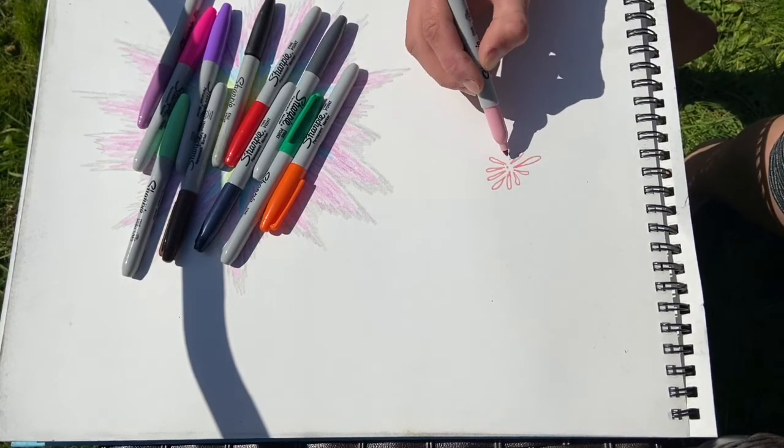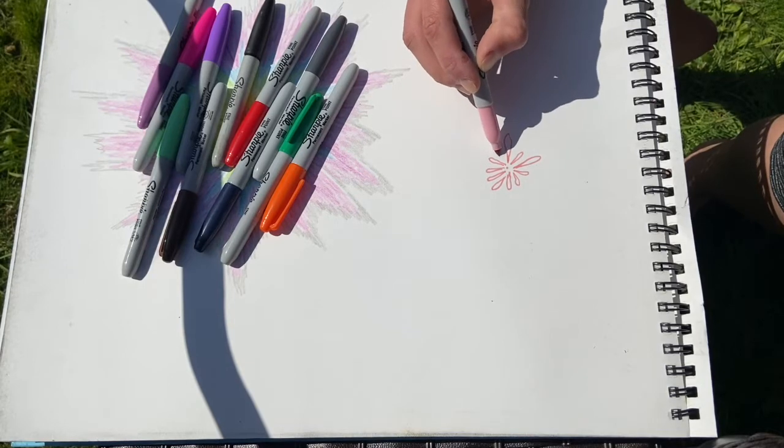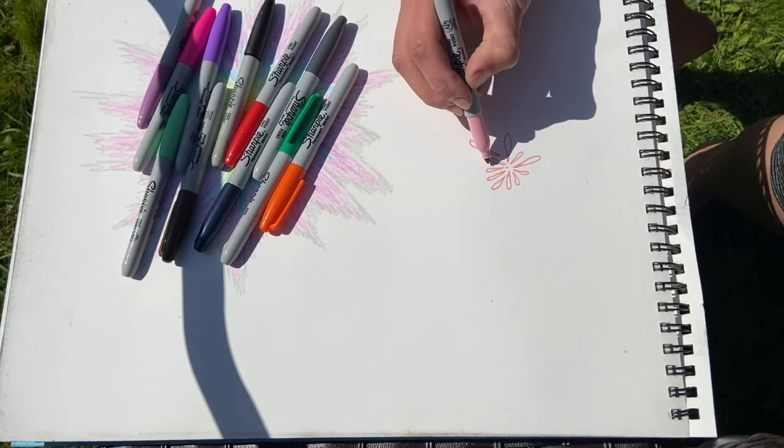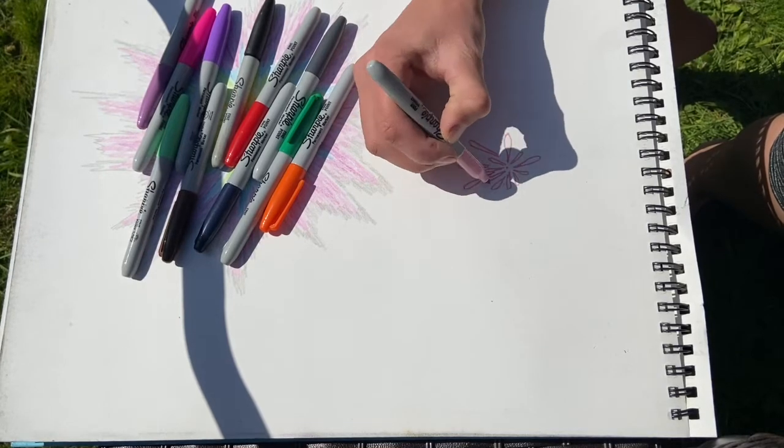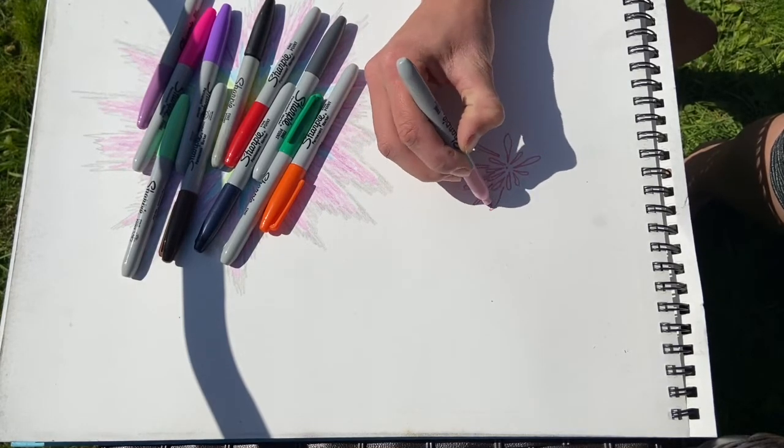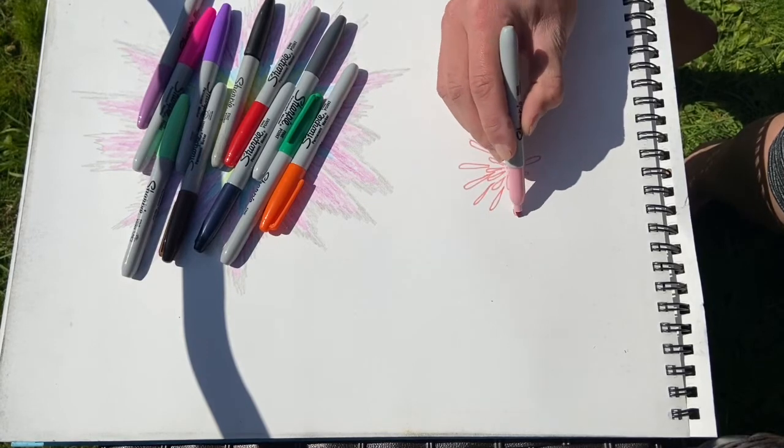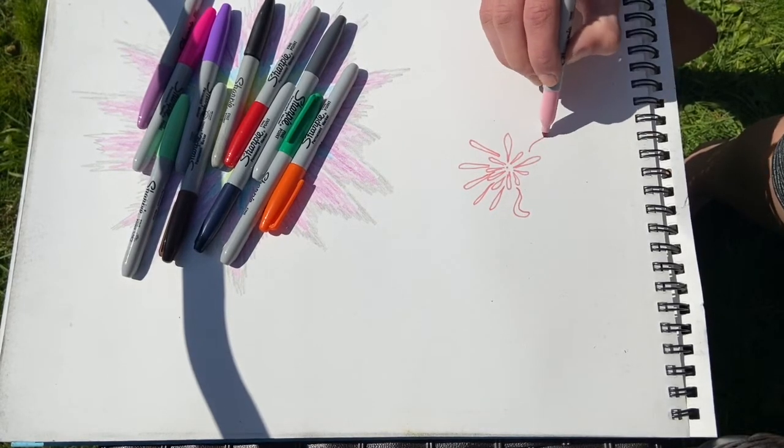When I get closer to the outside, notice I'm going to be making these teardrops or raindrops bigger and longer. They don't have to be the exact same or perfect. If you want something to be squiggly, I'll throw some squiggly ones in there.